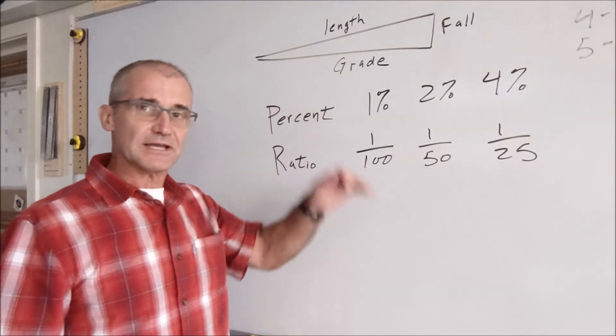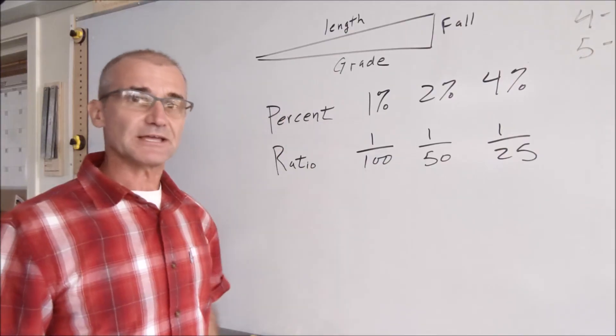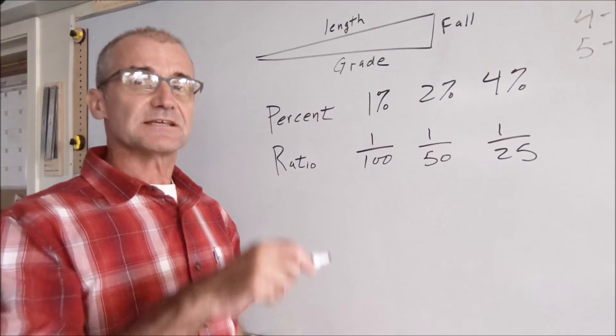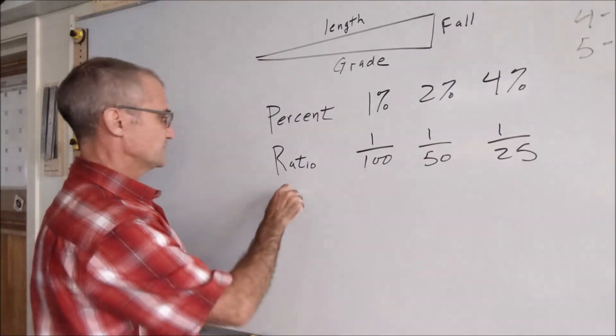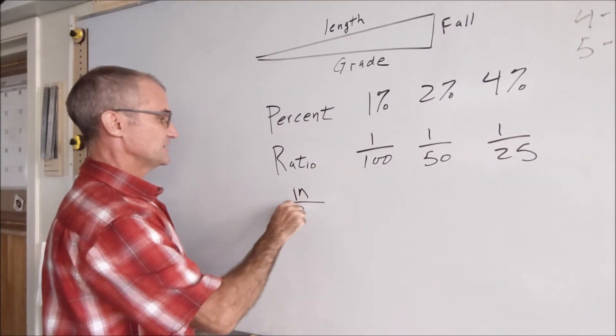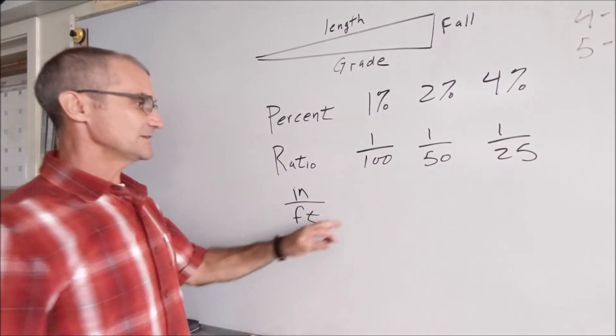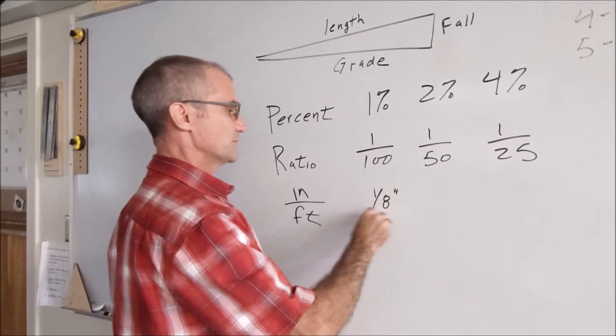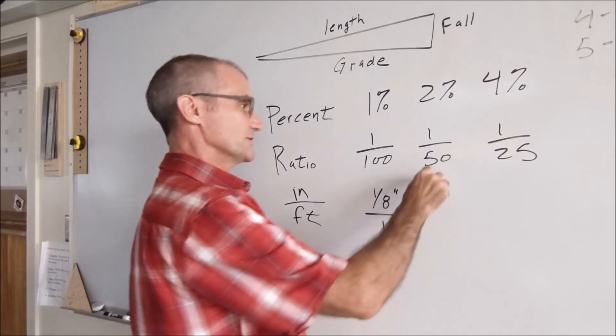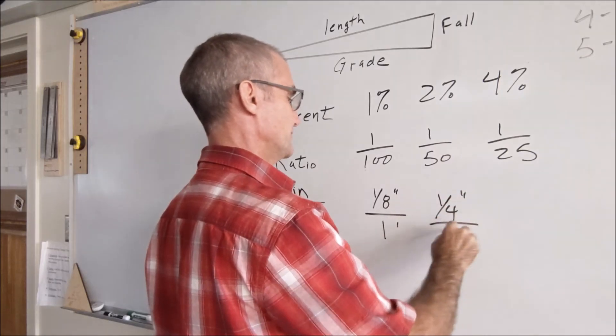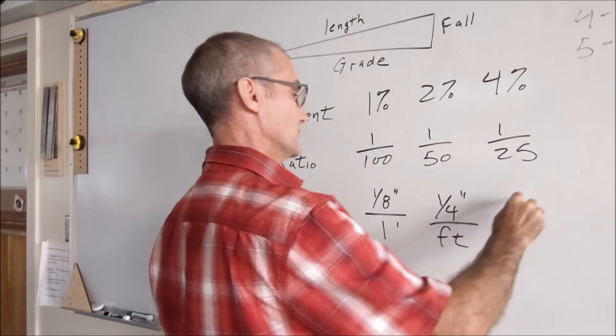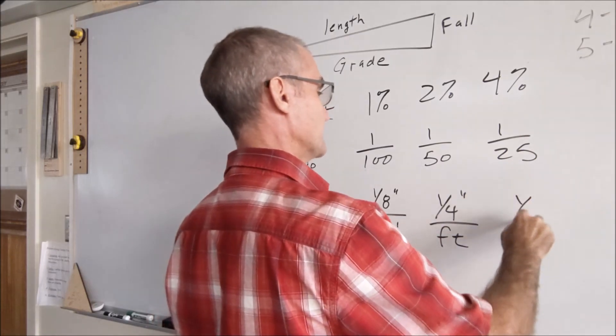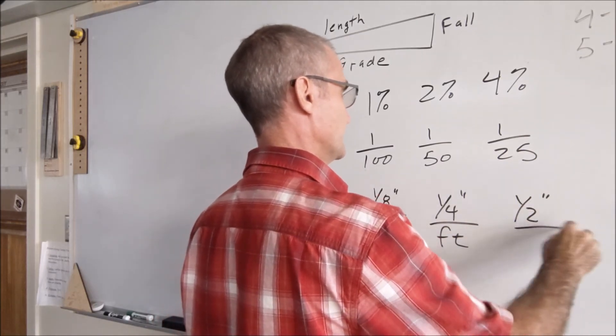The third way to look at grade, whether you're talking about a roadway or a pipe, is inches per feet. And you might see 1/8 of an inch of drop per one foot, or this is pretty common, quarter inch per foot, or a half inch per foot.